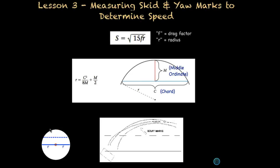Okay, now let's look at yaw marks, the formula for that. So again, we have speed, and this one is even simpler. Speed is just the square root of 15, again a constant, times the friction or drag factor times the radius.